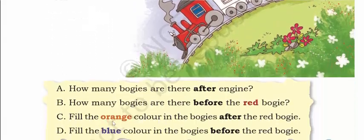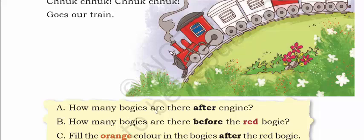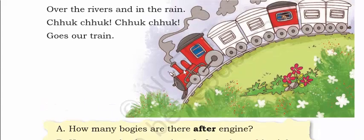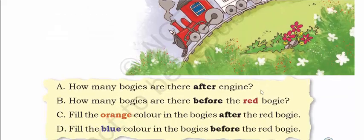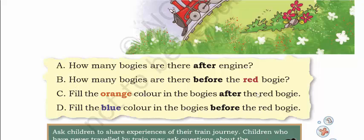How many bogies are there after the engine? Here we can see the engine, and after the engine — let's count: 1, 2, 3, 4 and 5. So there are 5 bogies after the engine. Write 5 bogies for the first answer. How many bogies are there before the red bogie? This is the red bogie. Before it, in front of it, there are 2 bogies. So the answer for B is 2 bogies.